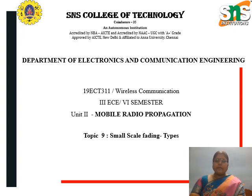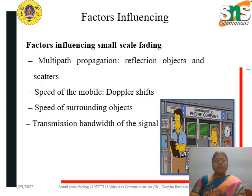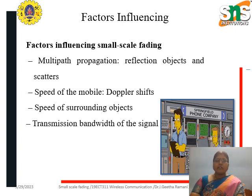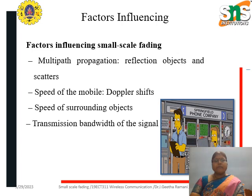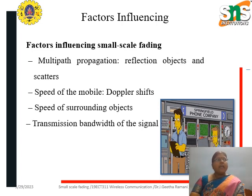In this video we are going to discuss the different types of small scale fading. Small scale fading occurs only during a small duration and for a short distance. There are several factors which influence small scale fading: multipath propagation, which includes reflection objects and scatterers, speed of the mobile where we encounter the Doppler shifts, speed of the surrounding objects, and transmission bandwidth of the signal.